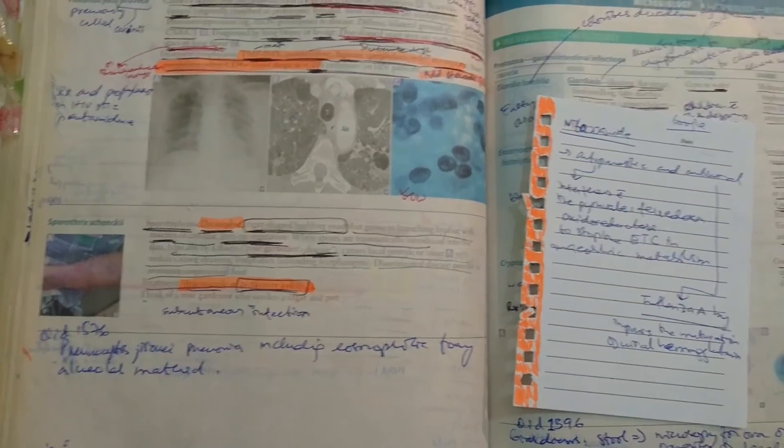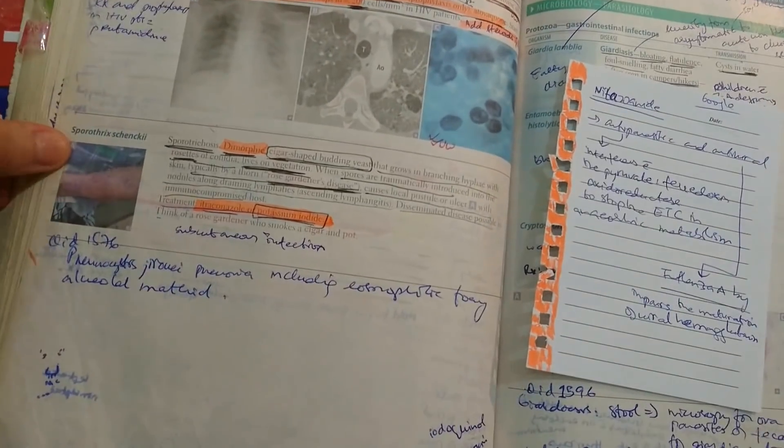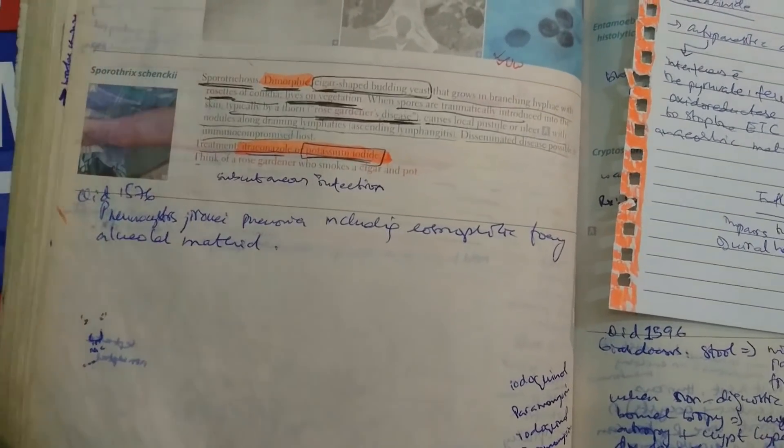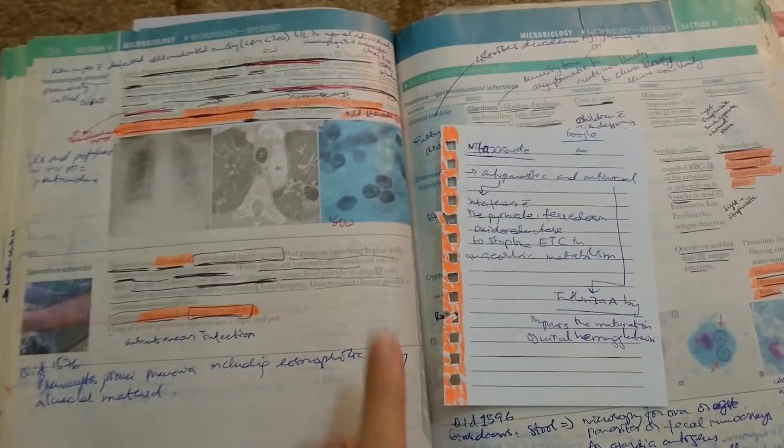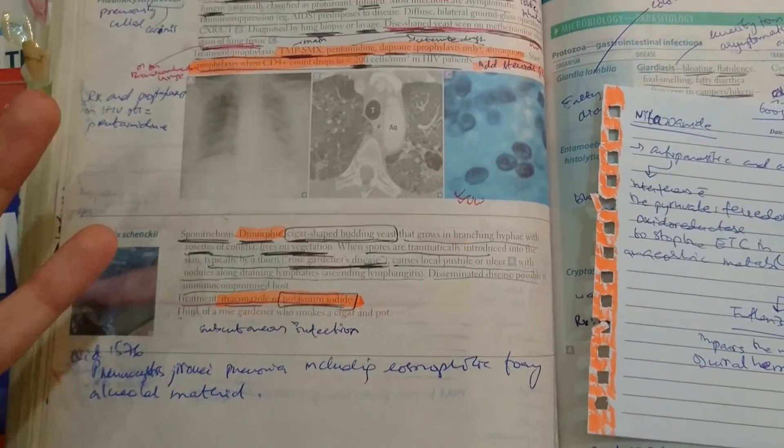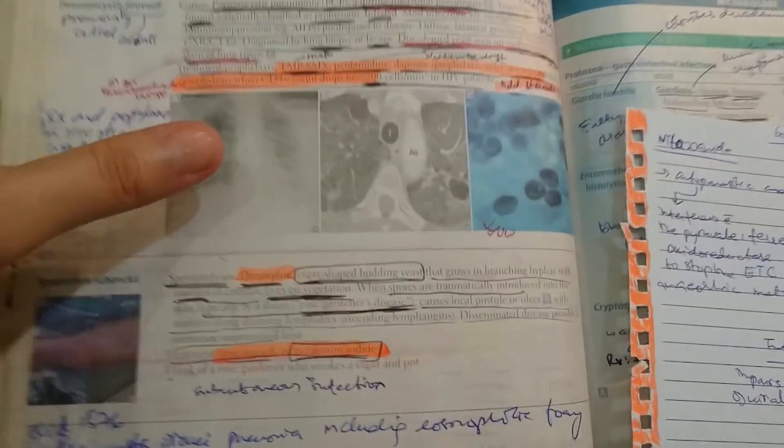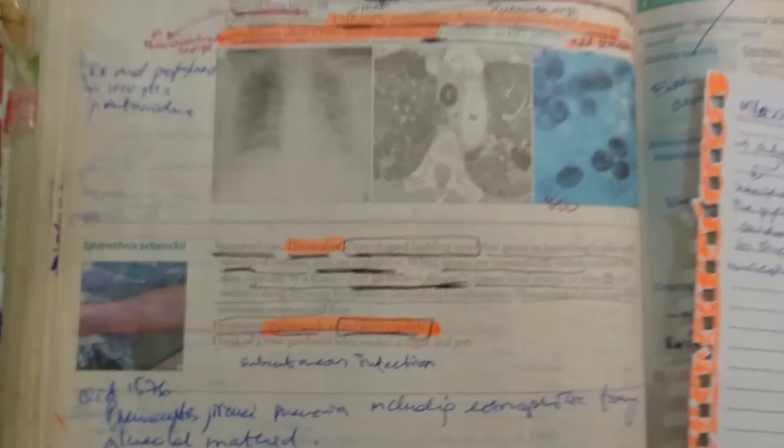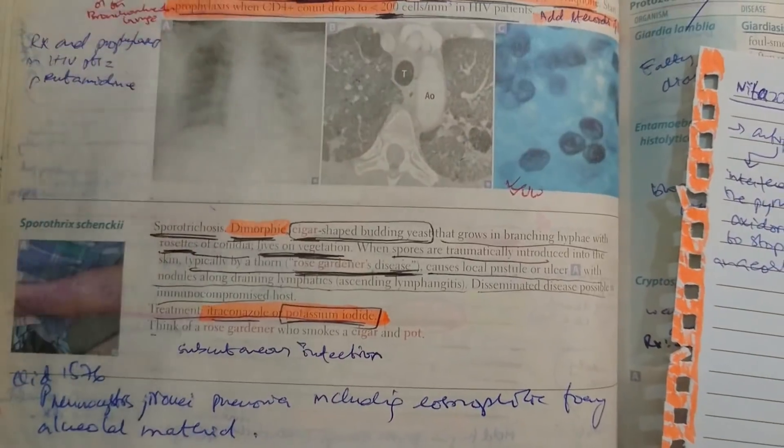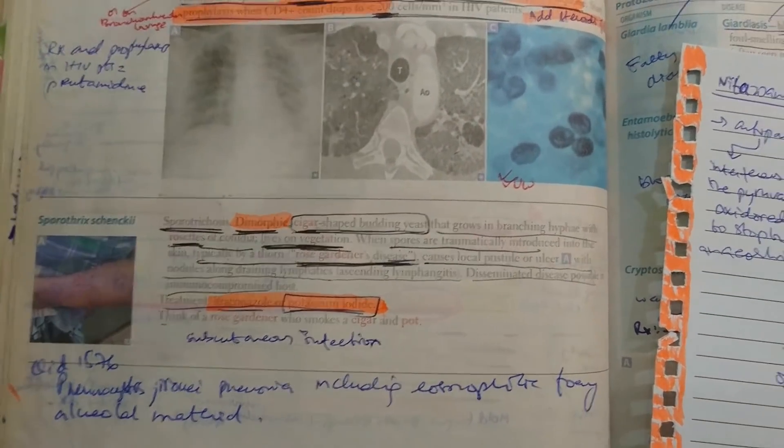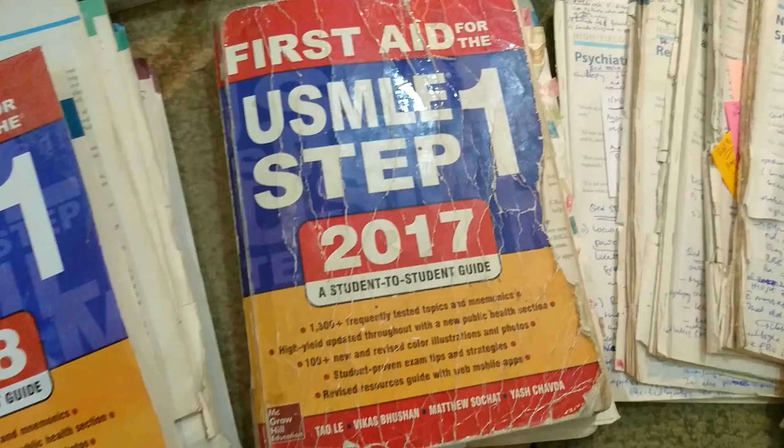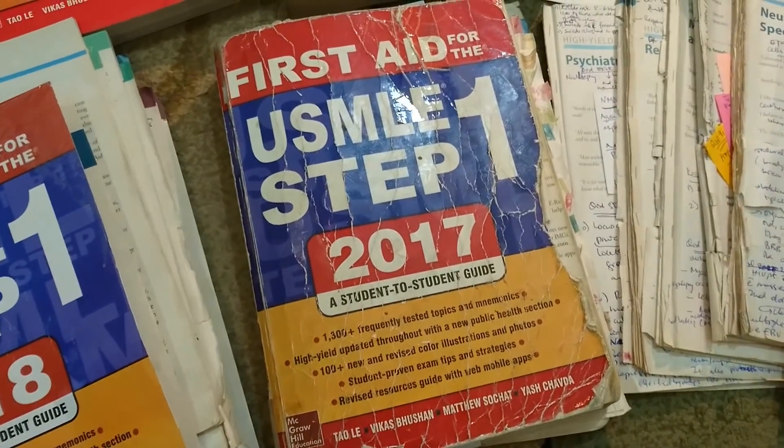So the last thing I want to show you guys is that the images given in First Aid, sometimes I would see that image in UWorld or NBME or UWSA. So I would just go ahead and mark that image in my First Aid and write down where I saw it. That way I know that that image is important. And sometimes there would be these CT scans or x-rays that wouldn't be too clear or maybe I would want to see different presentations of that particular disease, so I would just go ahead and google them up and have a look at the different ways in which it could present.